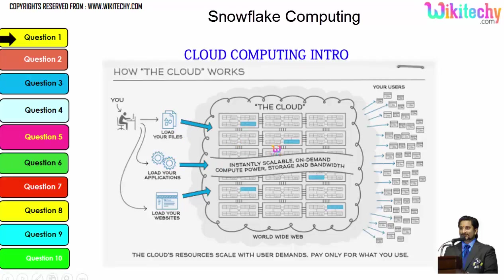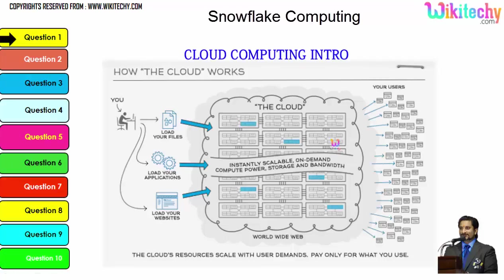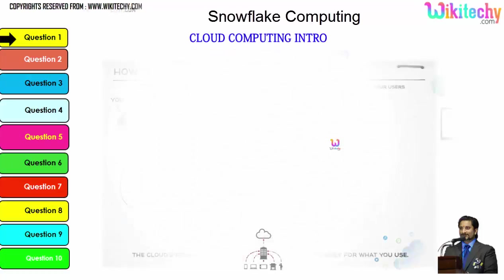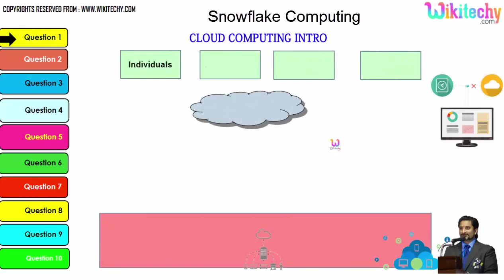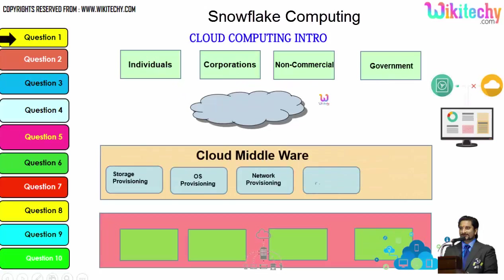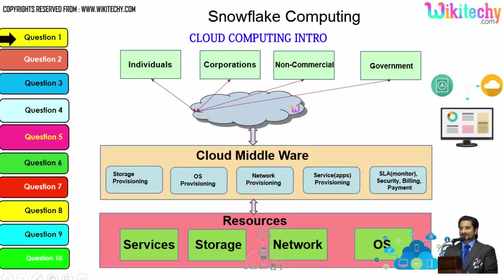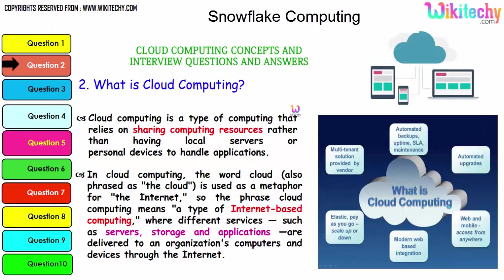Cloud computing is like renting servers or services and utilizing them. You are able to see this is a cloud — I'm loading a file, loading applications, loading my website so that any users can access it, and tracking or monitoring becomes really easy. There are different types of users: individuals, corporations, non-commercial people, and government. From any of these users, they are able to access services, storage, networks, or operating systems via the cloud middleware — specialized software given by the cloud service provider to access resources.